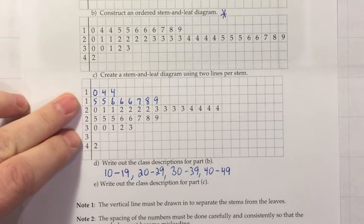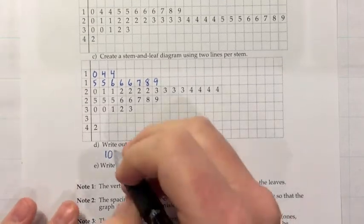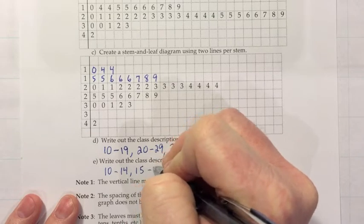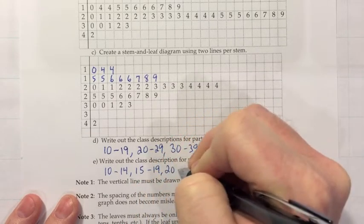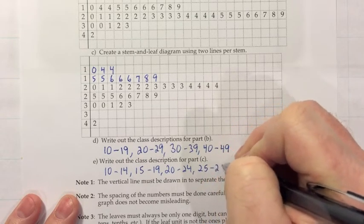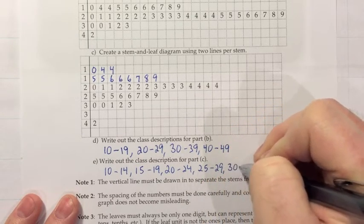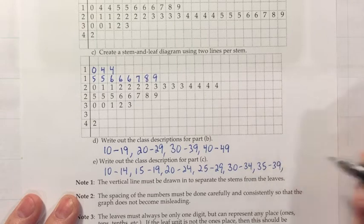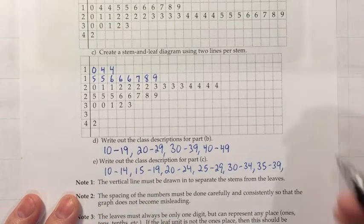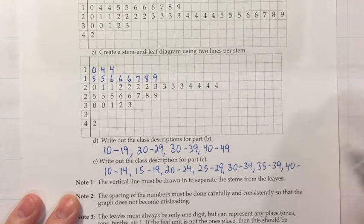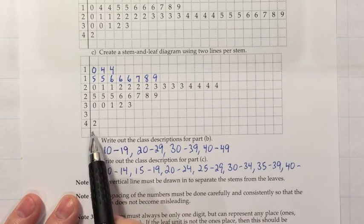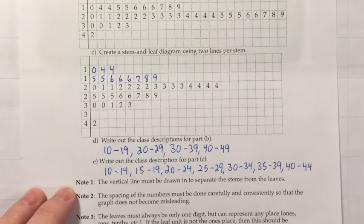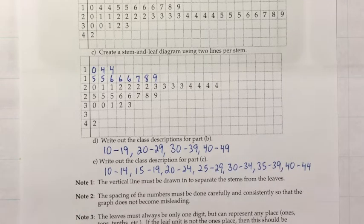Now when we broke it into two lines per stem, we said we were doing lower and upper. So now instead of that first line going all the way to 19, it just would go to 14. And then we would have 15 through 19 and so on. And just like we should show that empty class, we should list it as well. So 35 through 39 really was one of the classes in this stem and leaf diagram. It just happened to be empty. And then on this last one, even though we only had one of them, if it's two lines per stem, they should be equal width. So this one should be 40 through 44 because it should just represent the lower 40s. And then we don't need to list the 45 through 49 because we didn't put that one on the graph.